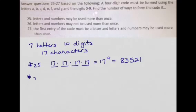In number 26 there are actually two ways to figure this out. Again I have a four character code and now letters and numbers may not be used more than once. So the first time I have 17 to choose from but the next time I have 16 and then 15 and then 14 and that's equal to 57,120.